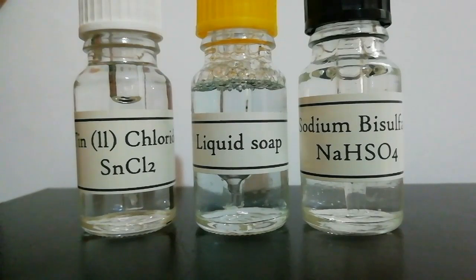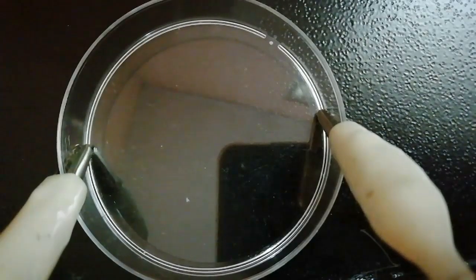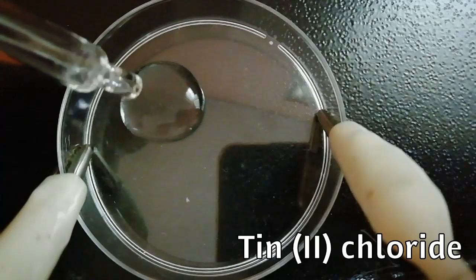You can use 4 AA batteries or a power pack. Tin(II) chloride preparing process is shown in a previous video. First you need a petri dish with 2 crocodile clips attached to the bottom like in here.